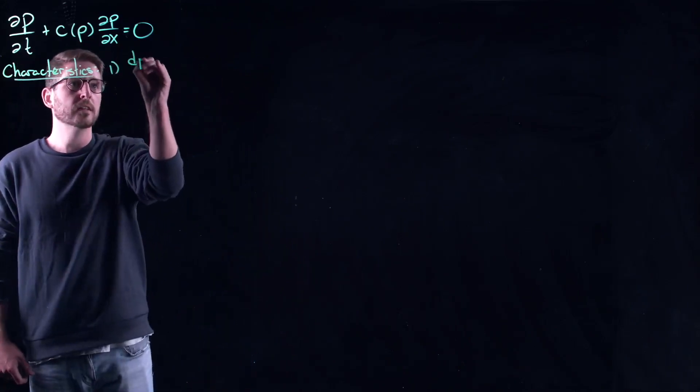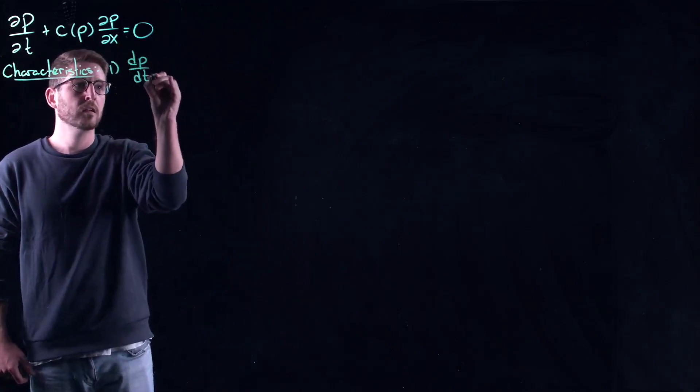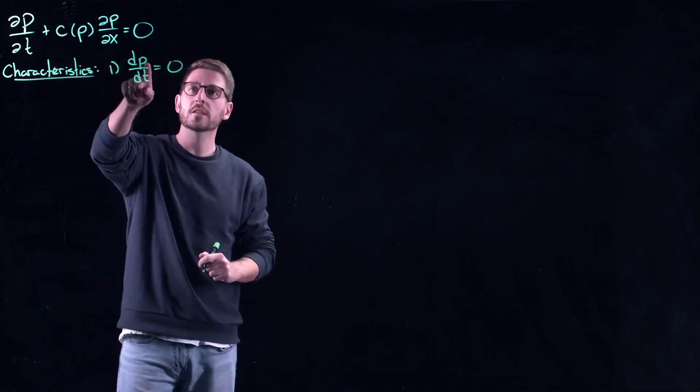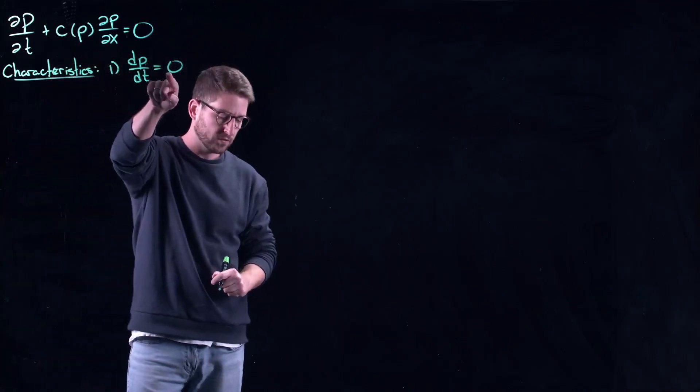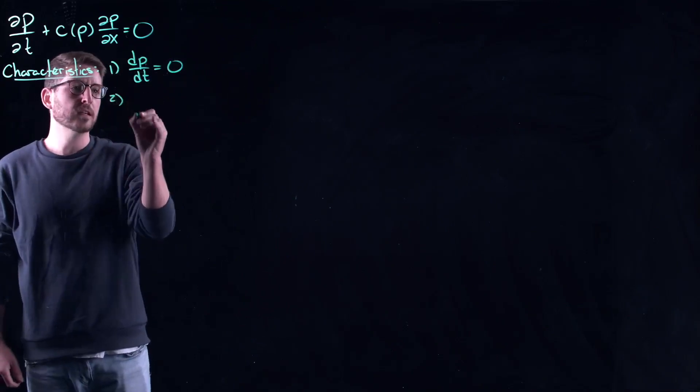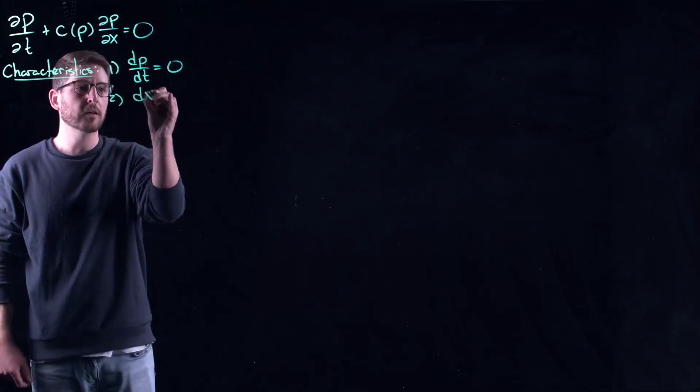The first one tells us that along the characteristics the solution does not change its value, so we're constant along the characteristics. The second one tells us the equation for the characteristics.